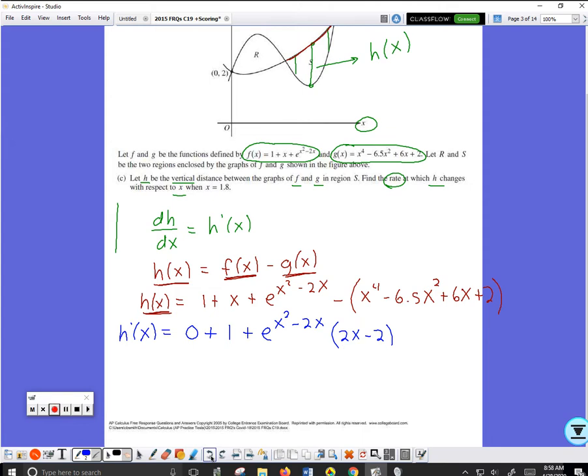Then I would have the minus right here, so minus parenthesis 4x cubed minus 2 times 6.5x plus 6 plus 0. So that's my formula for h prime of x.